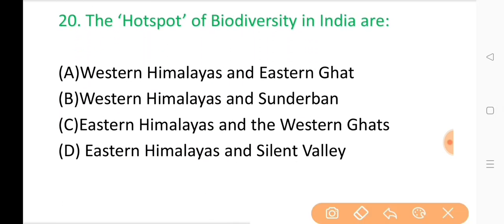Question No. 20: The hotspots of biodiversity in India are? The correct answer is Option C: Eastern Himalayas and the Western Ghats.